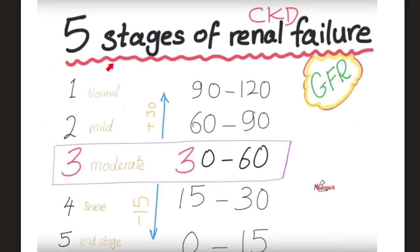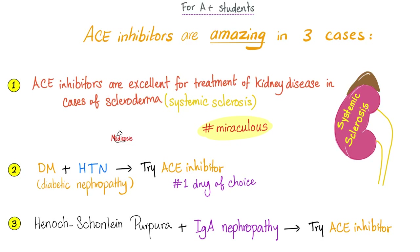Here are the five stages of chronic renal failure. ACE inhibitors are especially miraculous in three specific cases: number one, scleroderma nephrosis; number two, diabetic nephropathy with hypertension; number three, Henoch-Schönlein Purpura. In any of these cases, give ACE inhibitors — but they are contraindicated during pregnancy.